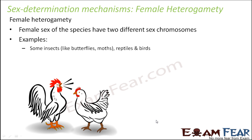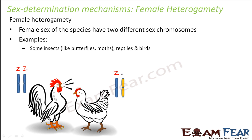Let us take the example of birds like chickens. Here, the male will have the same set of sex chromosomes, but the female will have different sex chromosomes. The males are represented as ZZ, while the females have different chromosomes represented as ZW. This is how the sex chromosomes are represented in birds where female heterogamity is seen.